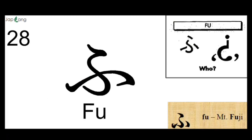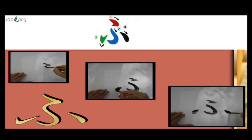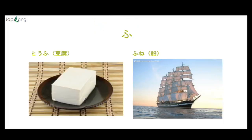Next is FU. You can relate to the picture on the right-hand side — FU looks like a question mark, or an opposite question mark. This is FU as in Mount Fuji. This is how we write FU — please pay attention to the stroke order. FU as in Tofu, or Fune — Fune means ship. Tofu looks like paneer, what we have in India.